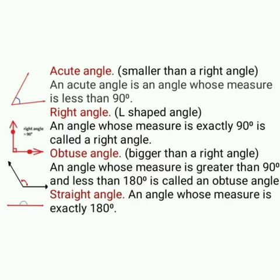Let me define each angle. An acute angle is an angle that measures less than 90 degrees. A right angle is an angle whose measure is exactly 90 degrees. An obtuse angle is an angle whose measure is more than 90 degrees and less than 180 degrees. A straight angle is an angle whose measure is exactly 180 degrees.